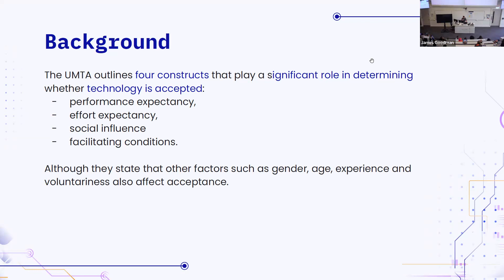The four UTAUT constructs are: performance expectancy — how well do we expect the algorithm to perform; effort expectancy — how difficult would it be to integrate and use; social influence — looking at factors like whether discourse on Twitter is controversial, which significantly affects willingness to try things; and facilitating conditions — such as whether use is voluntary, whether they have prior experience, and demographic factors like age and gender.